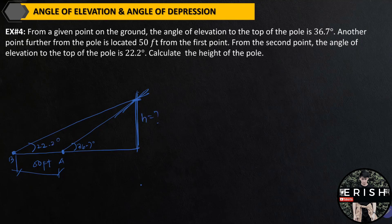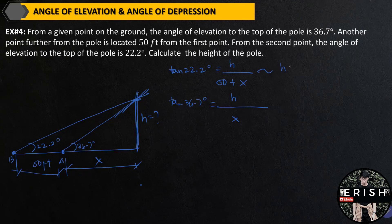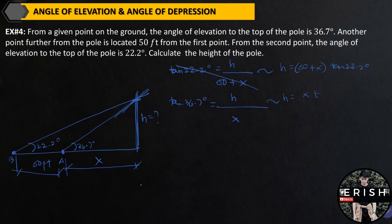Calculate the height of the pole. Using the tangent function and the angle of elevation: tangent 22.2 degrees equals opposite (H) over adjacent (50 feet plus X). Using the angle of elevation at 36.7 degrees and the tangent function: tangent 36.7 degrees equals height over simply X. By derivation, this gives H equals (50 + X) times tangent 22.2 degrees, and H equals X times tangent 36.7 degrees.